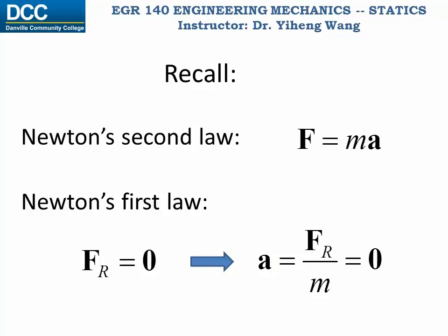If you recall, Newton's second law states that an object's linear acceleration is the result of unbalanced forces acting on the object. As a special case, when the resultant force is zero, in other words there is no unbalanced force, then the object will have an acceleration of zero as well. This means there is no change in the object's velocity, and therefore the object is either at rest or moving with a constant velocity. This is known as Newton's first law.